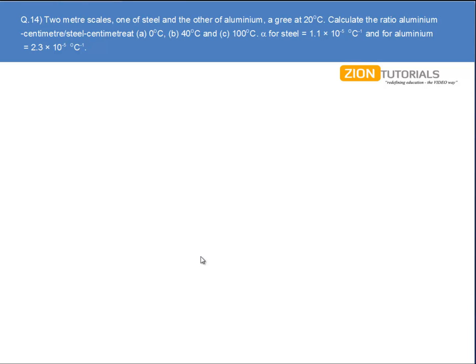Two meter scales, one of steel and other of aluminum, agree at 20 degree Celsius. Calculate the ratio of aluminum centimeter to that of steel centimeter at 0 degree, 40 degree, and 100 degree. First, we will calculate at temperature 0 degree Celsius. The two meter scales give the exact dimensions at 20 degree, so at 20 degree the length for aluminum is equal to the length of steel, that is exactly one centimeter.